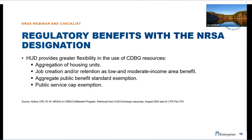HUD provides greater flexibility in the use of CDBG resources and they may reduce your reporting burden. The first benefit is the aggregation of housing units. Housing units assisted in an approved NRSA during each program year may be considered a single structure for purposes of meeting a national objective. The grantee must maintain documentation that 51% of units are completed for low and moderate income households. Outside an NRSA, 100% of single family homes must be occupied by low and moderate income households. This housing incentive applies to both single family and multi-family housing.